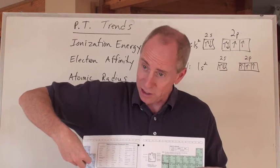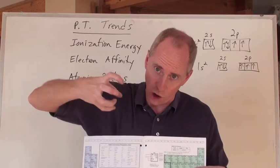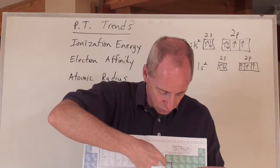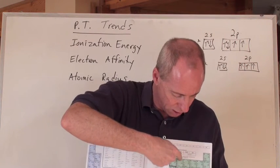You're going to get an increase in ionization energy, so it's harder to remove the outermost electron from beryllium, but then it's harder to remove the outermost electron in boron, then carbon, then nitrogen.